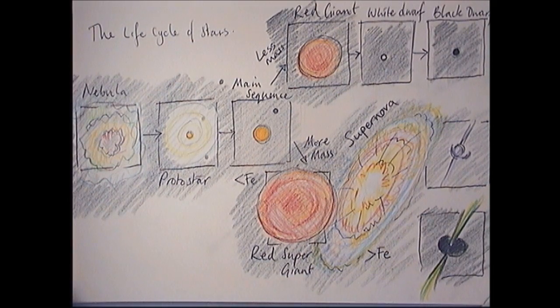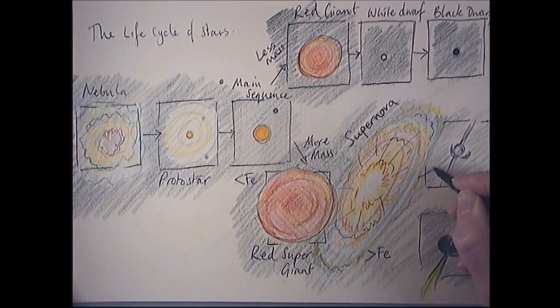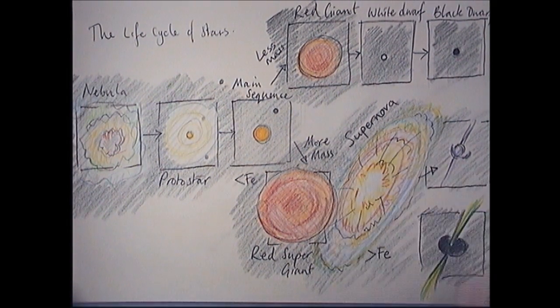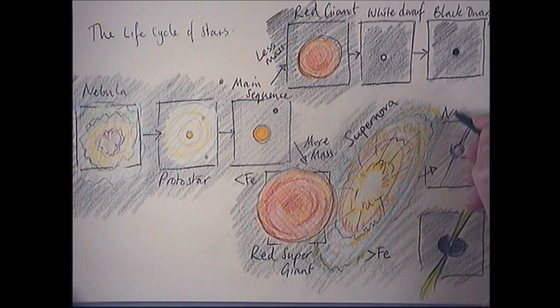And again, then there's two options. If it's got less mass, it can turn into this thing here. It's called a neutron star.